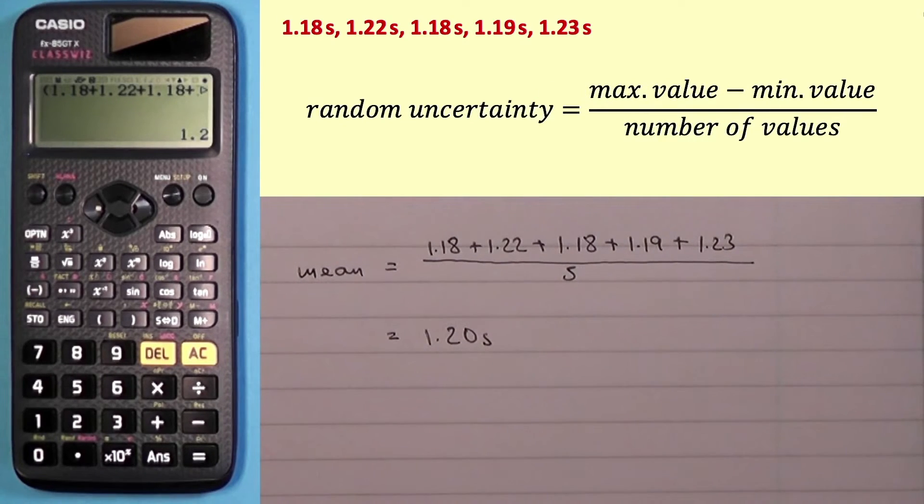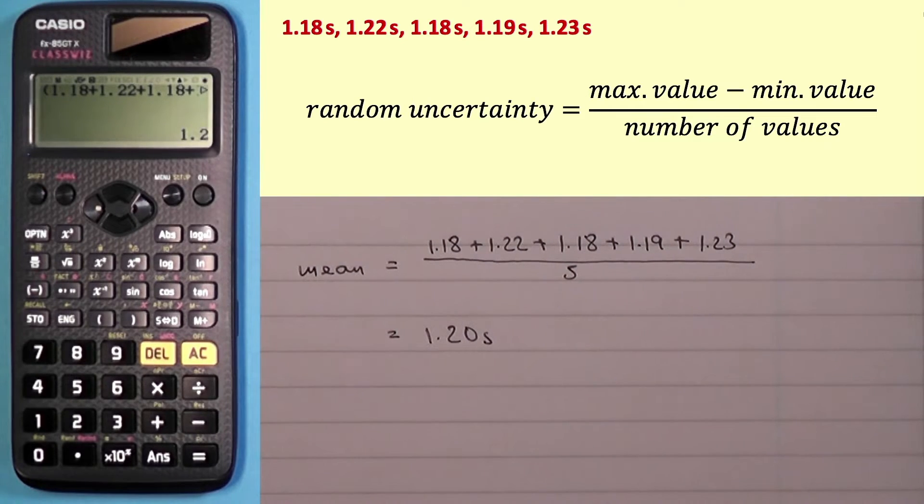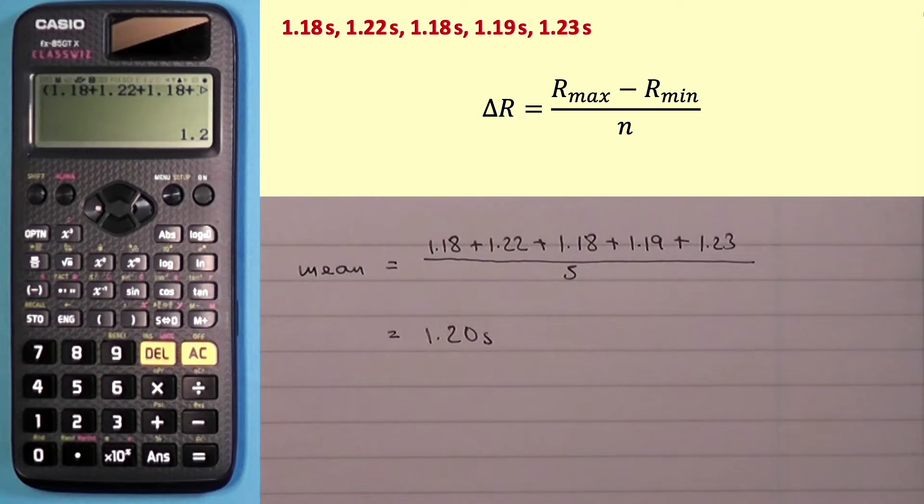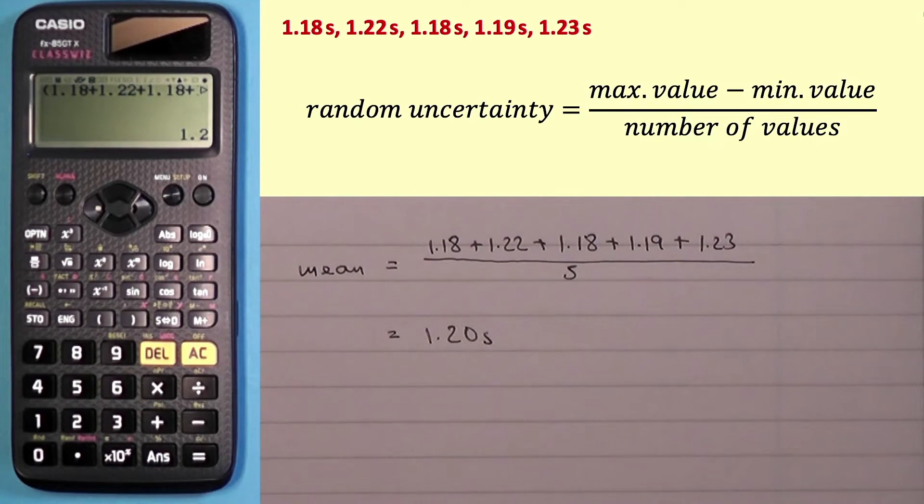Now let's see press this button again. Remember we were asked to work at the random uncertainty in these values as well. Well the last equation that we saw in order to work at the mean that's not given in the relationship sheet but this equation is. So it's actually written in two different forms as well. So it's either written as random uncertainty is equal to max value minus min value divided by number of values but I think this only started for this year's paper, the 2023 paper. Remember it's also written in this form that delta r is r max minus r min divided by n. I'm going to go back to that one.